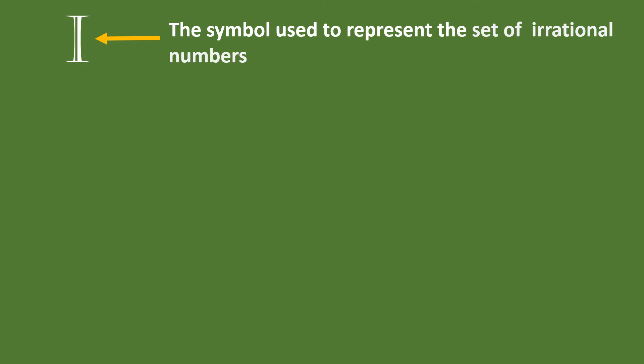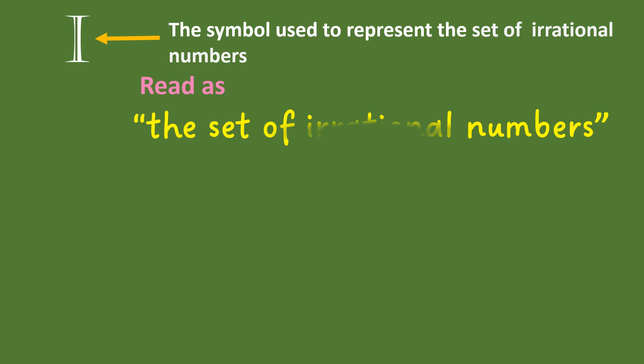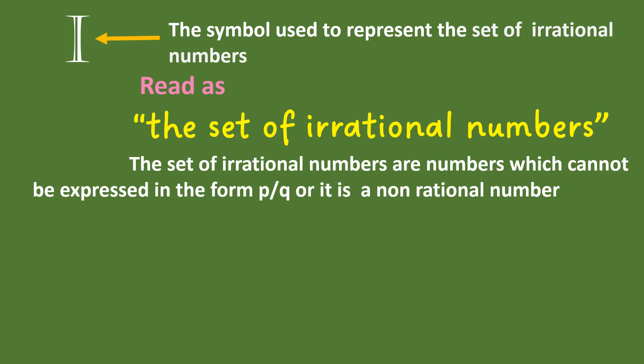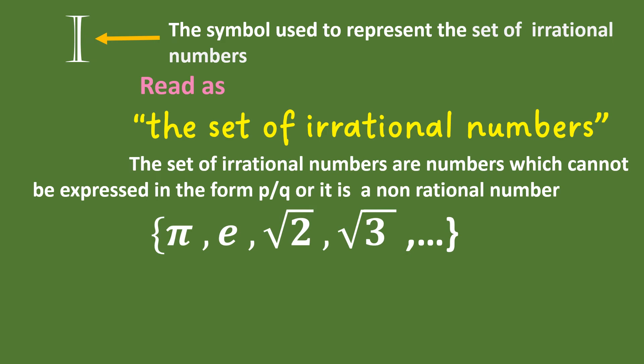The capital letter I is used to represent the set of irrational numbers. When you see this letter I in a mathematics book, you read it as the set of irrational numbers. The set of irrational numbers are numbers which cannot be expressed in the form P over Q, or it is a non-rational number. Examples of irrational numbers are pi, square root of 2, and square root of 3.